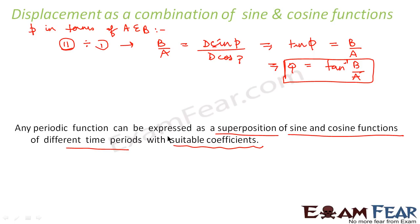So, what were the suitable coefficients here? Suitable coefficients were nothing but D. D and φ were the different values which we used. So, using different coefficients, we can express any periodic function as a superposition of a sine function and a cosine function. Thank you.